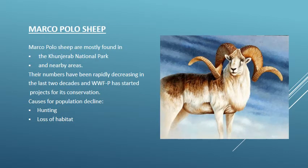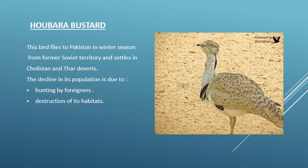Marco Polo Sheep are mostly found in the Khunjerab National Park and nearby areas. Their numbers have been rapidly decreasing in the last two decades, and WWF Pakistan has started projects for conservation. Causes for population decline are hunting and loss of habitat. The Houbara Bustard is a bird that flies to Pakistan in winter from former Soviet territory and settles in the Cholistan and Thar Deserts. The decline in its population is due to hunting by foreigners and destruction of its habitats.